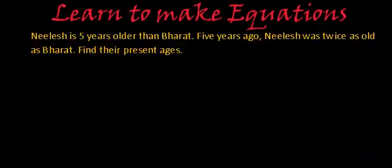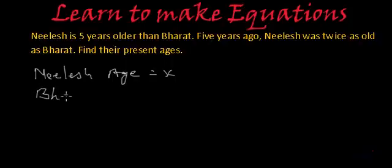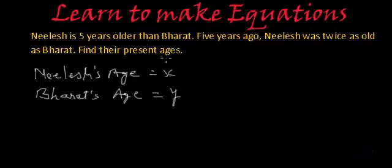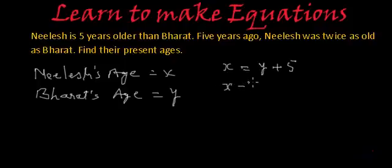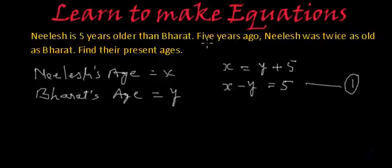In the second method, let's assume Nilesh's age is X years and Bharat's age as Y years. They say Nilesh is 5 years older than Bharat, which means X is equal to Y plus 5, or X minus Y is equal to 5. We can call this equation number 1. Now, the second part says 5 years ago, Nilesh was twice as old as Bharat. So 5 years ago, Nilesh's age was X minus 5.